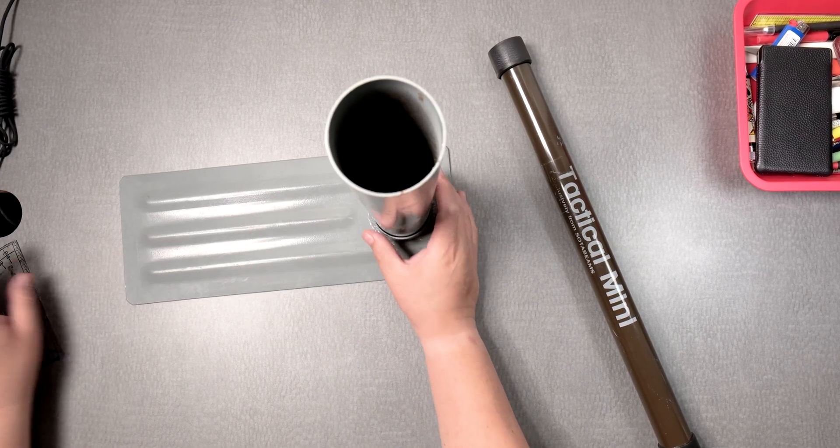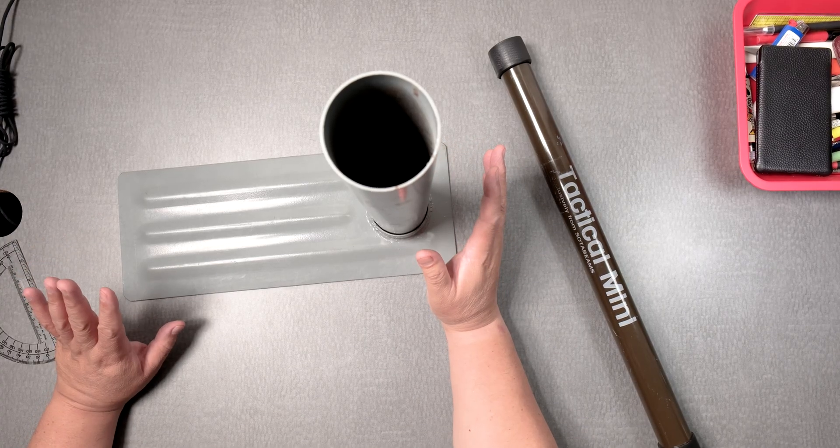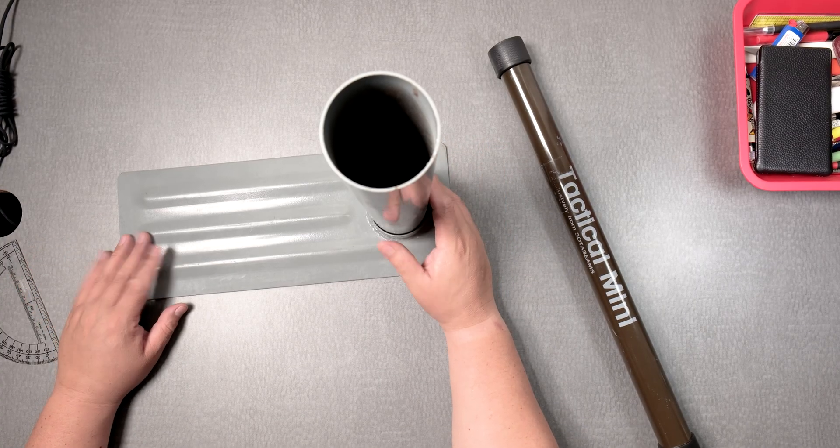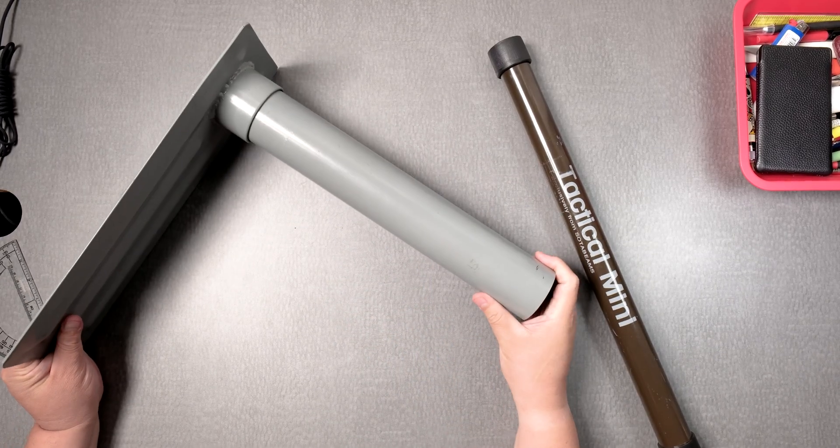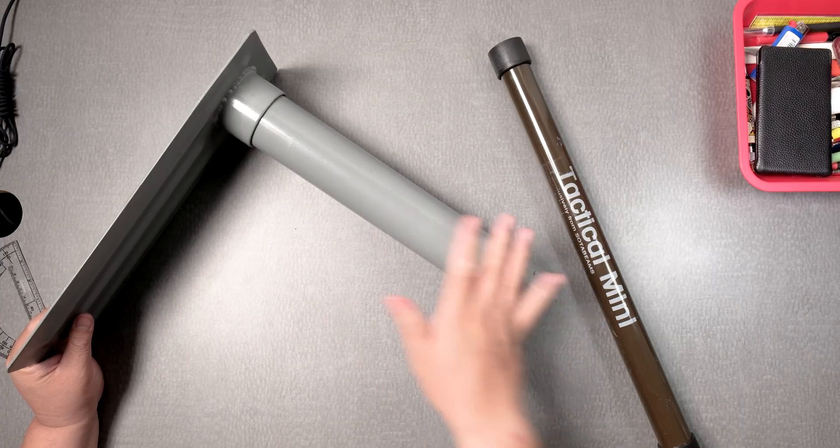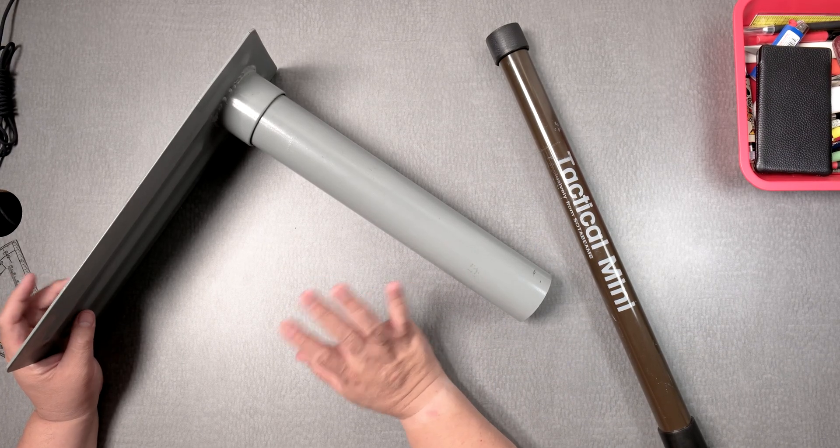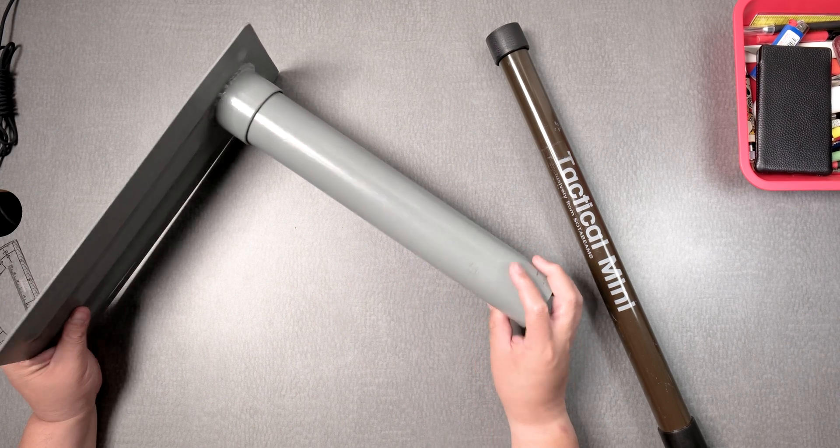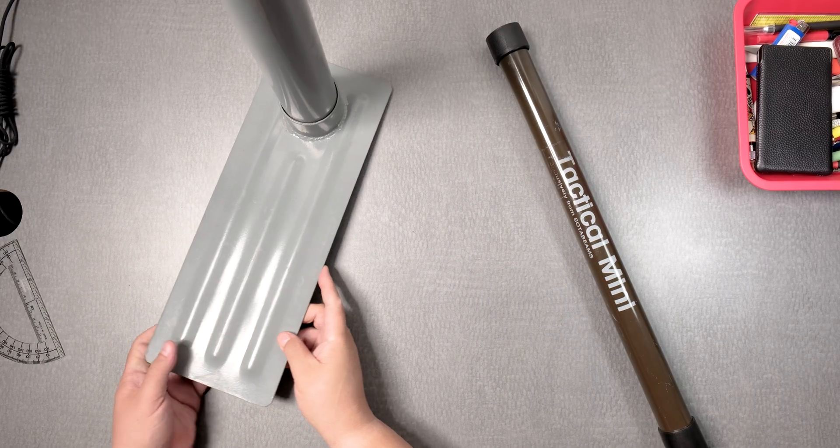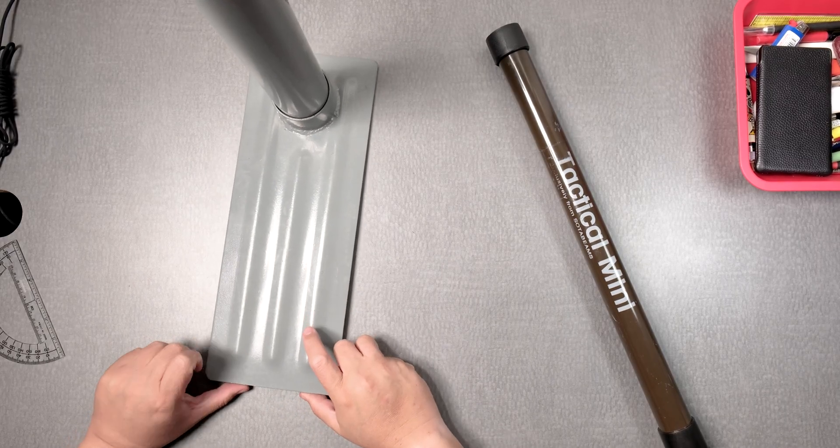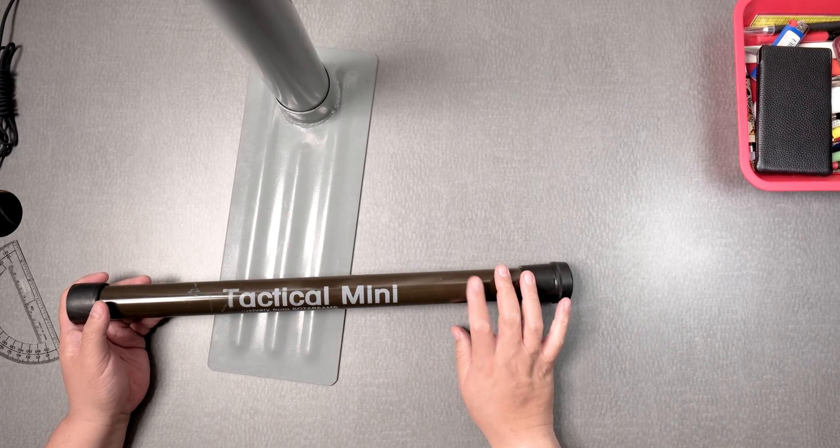So this might be something that you want when you are wanting to do something more like mobile, like I did during winter field day, which I am going to have this type of setup for field day in the summer. I feel like that's going to be beneficial because I did get a lot of contacts. I felt like I got more contacts having a quarter wave ground plane antenna using a mast and the tactical mini from soda beams is perfect.